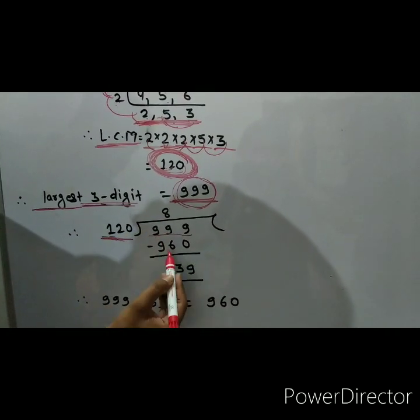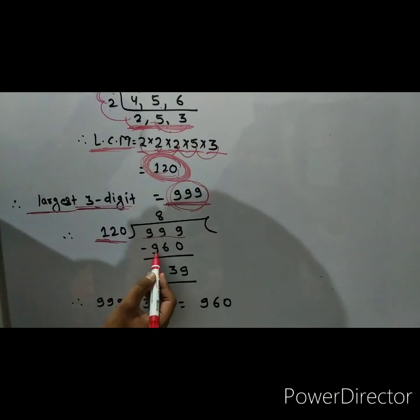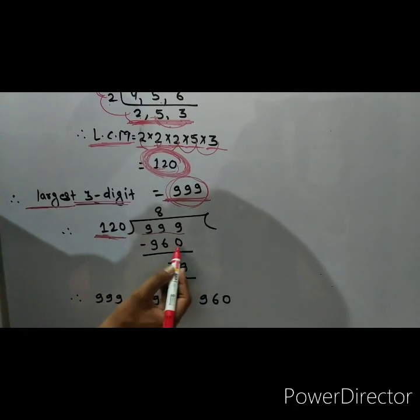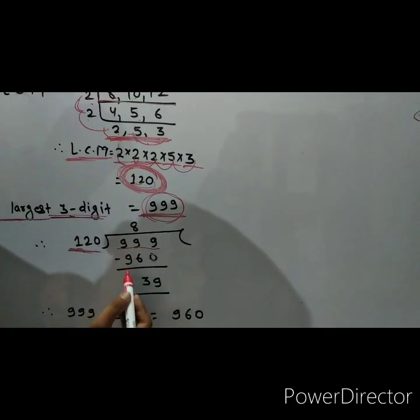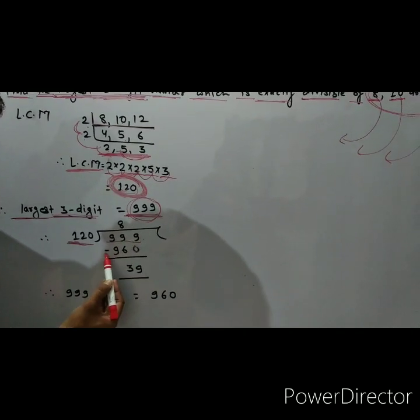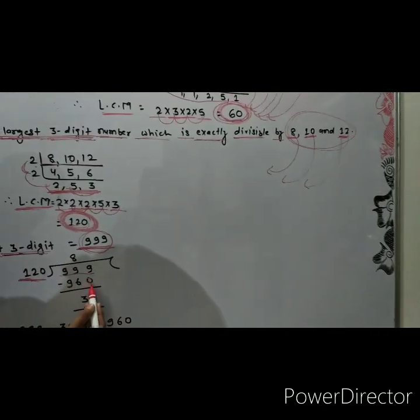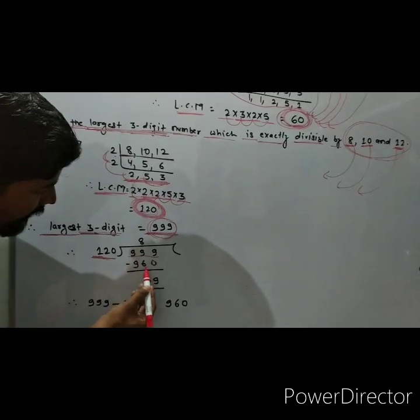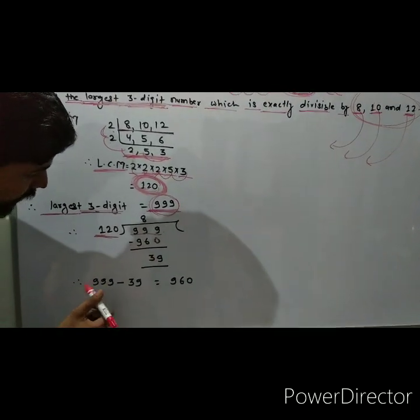So 12 into 8 is 96. So it is 960. Put 0 in its place student. Therefore, 999 minus 960. 9 minus 0 is 9, and 9 minus 6 is 3. So 39 is the remainder.